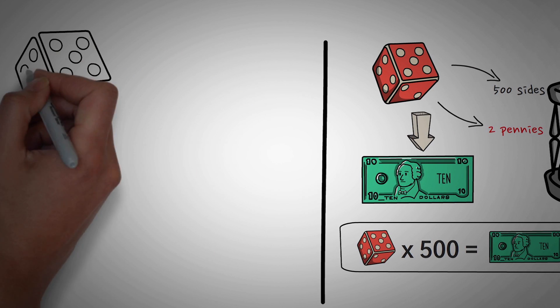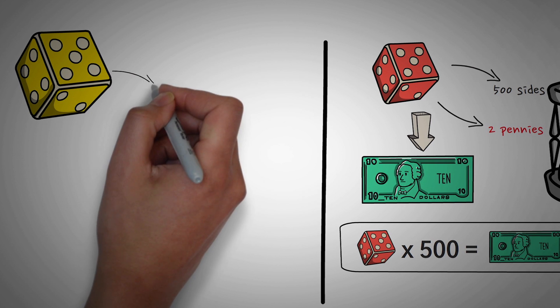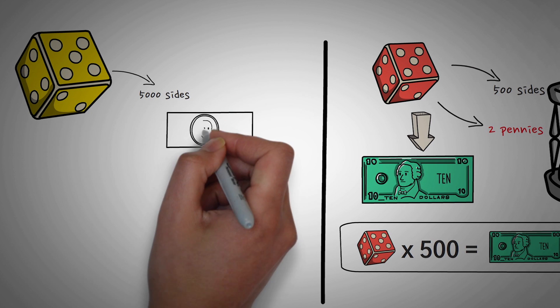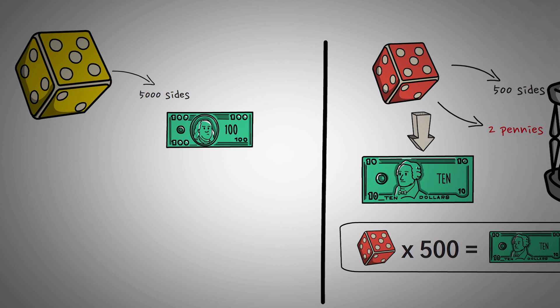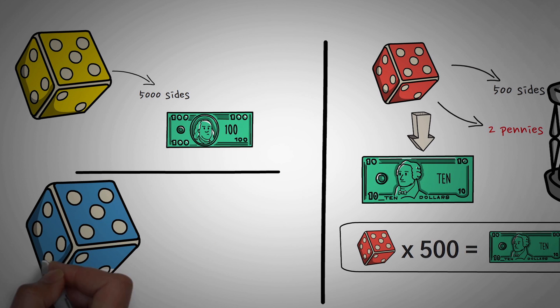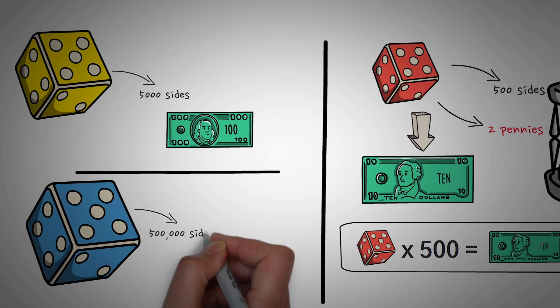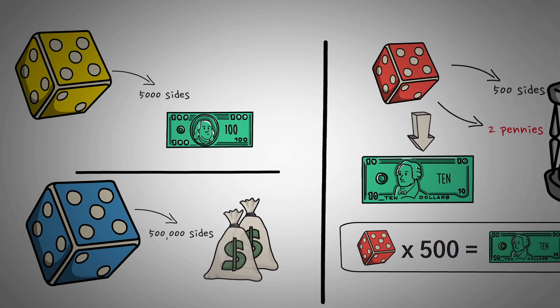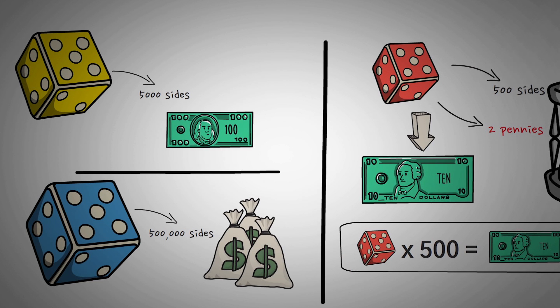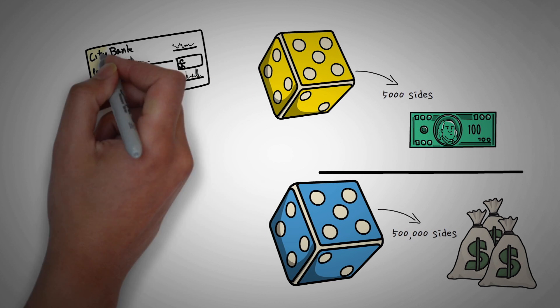Now imagine that there is a mega mega dice, and it has 5,000 sides, but it pays you $100 every time. Now scale that up. Take this example and extend it to a dice with half a million sides, but it pays you $10,000 whenever you hit the magical single side. So now it's basically a lottery.